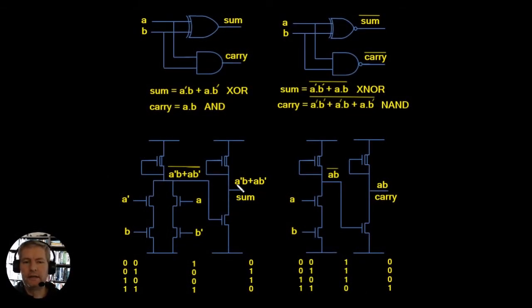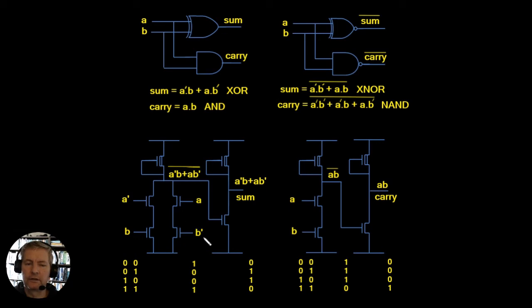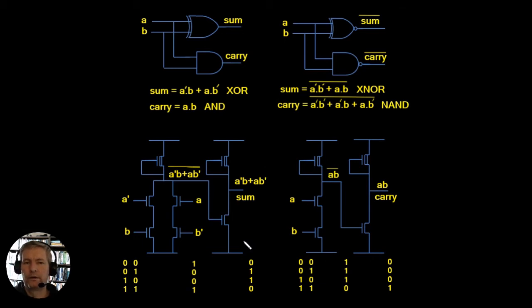Let's count the transistors needed to generate the sum (exclusive OR). We need access to A' and B', so we need two inverters — two transistors for A' and two for B', giving four so far. Then the remaining transistors in the XOR circuit bring us to a total of 11 transistors. There are smarter ways to implement this XOR — in fact as few as three transistors — but that's outside the scope of this course. What matters is understanding how to generate it using sums of products.